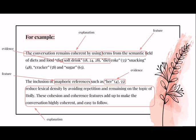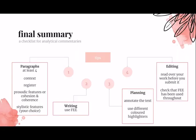Two example sentences illustrate different ways to use FEE structure. The first uses a slight variation: Explanation, then Feature, then Evidence at the end. The second uses the classic order: Feature, Evidence, Explanation. Brackets and boxes show where each part of the sentence starts and ends, to clarify what it actually looks like in practice.